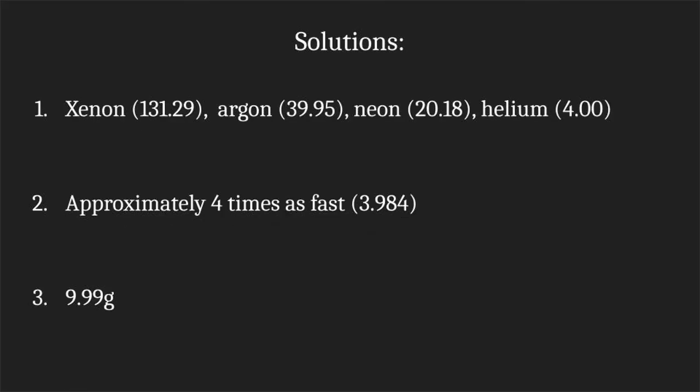To rank them from slowest to fastest, we're going to rank them from heaviest to lightest. So that would be xenon, then argon, then neon, then helium. For question 2, you should have gotten that hydrogen diffuses approximately 4 times as fast as oxygen, with the exact number being about 3.984. And for question 3, the mass of the unknown gas was approximately 9.99 grams.